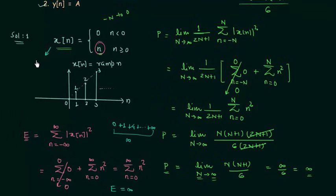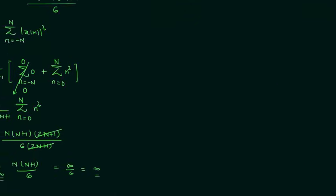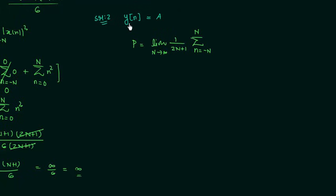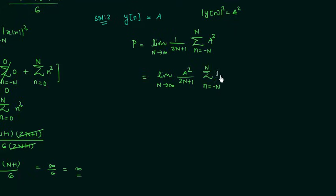Signal x[n] is neither an energy signal nor a power signal because it does not satisfy the conditions of either energy or power signals. Now we will solve the second problem. The signal is y[n] and it is equal to A. I will first calculate the average power P. It equals limit N tends to infinity of (1/(2N+1)) times the summation from n = -N to N of |y[n]|². Since y[n] equals A, |y[n]|² equals A².